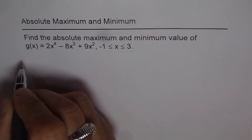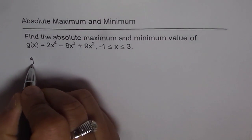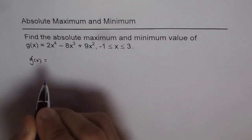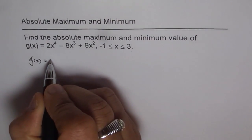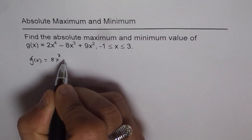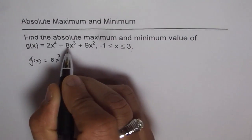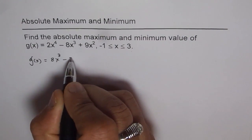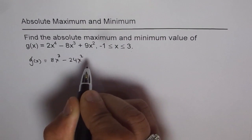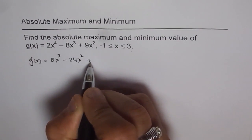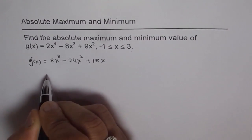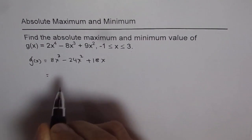Let's first find the derivative of the function: g'(x) = 4 × 2 = 8x³ minus 3 × 8 = 24x² plus 18x. Now let's simplify this.